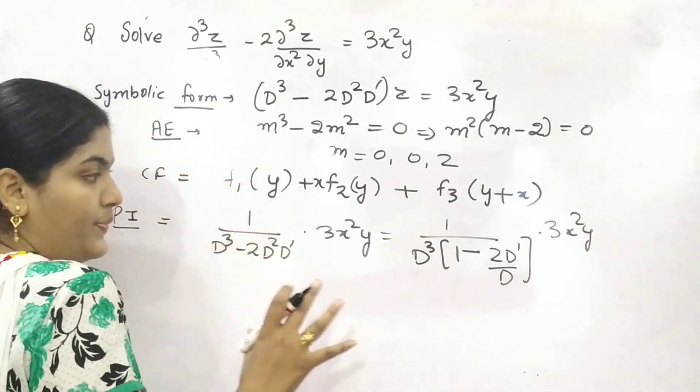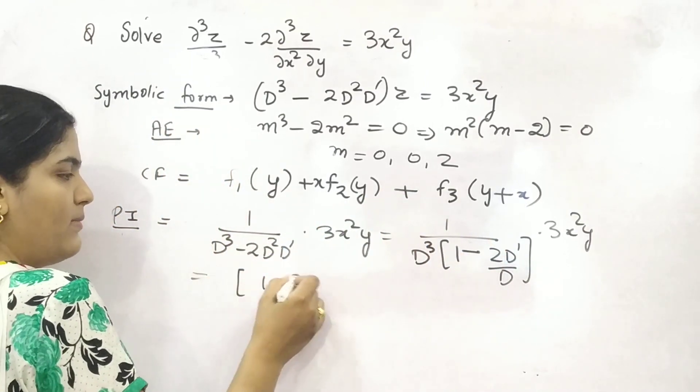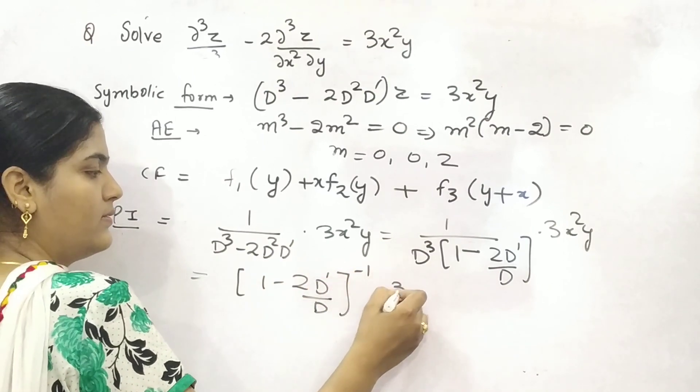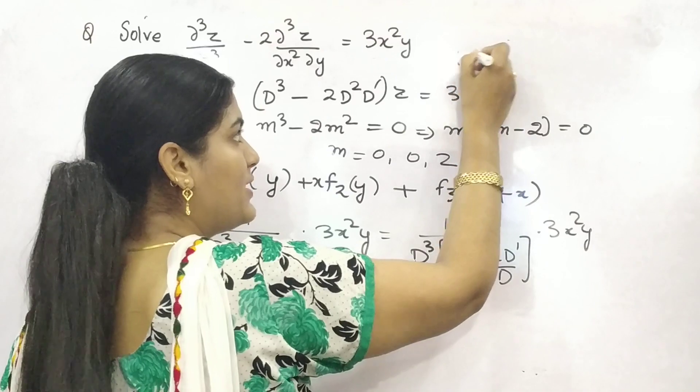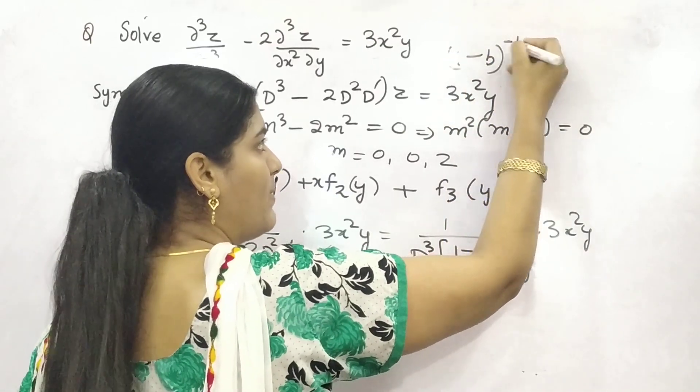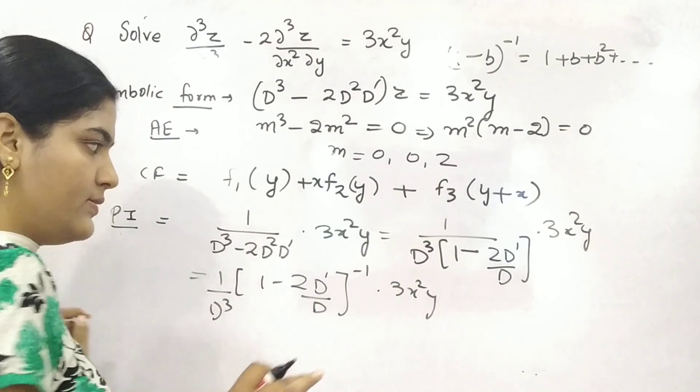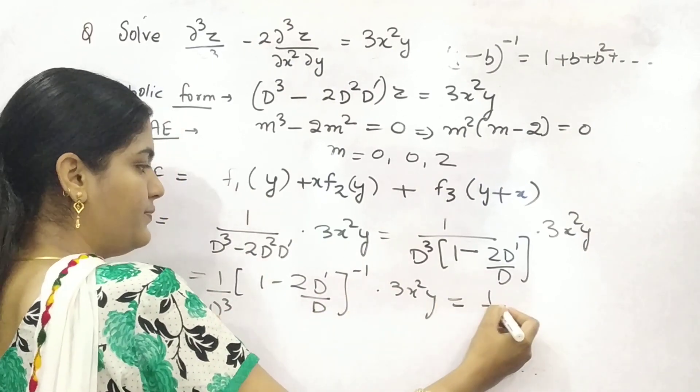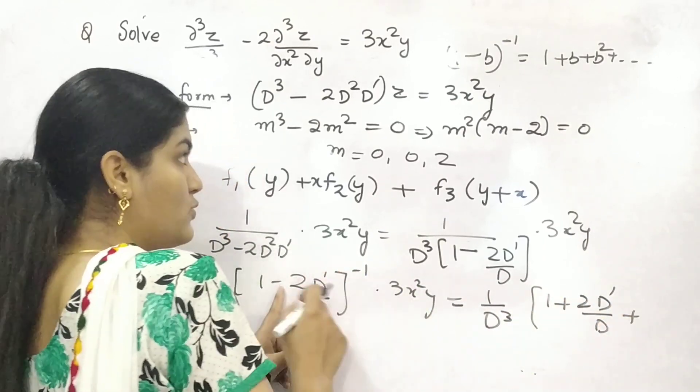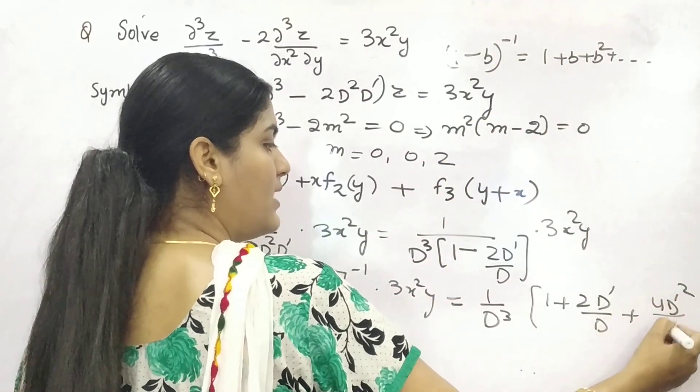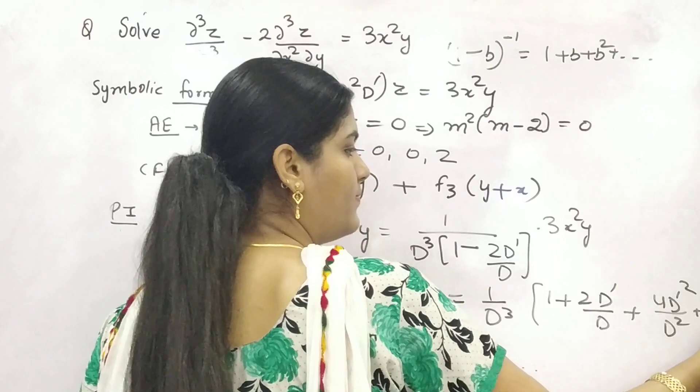Now, what you need to do. Simply remember, you have to take this denominator forming for numerator. (1 - 2d'/d)⁻¹. And your 1/d³ is still there. Now, for binomial expansion of (1-b)⁻ⁿ or (1-b)⁻¹, the formula is 1 + b + b² + b³ + b⁴ and so on. Similarly, you will get here, 1 + 2d'/d + square of this. So, 4d'²/d² and so on.